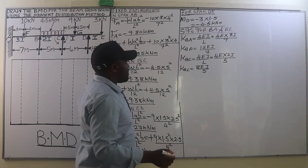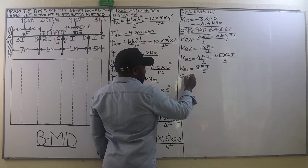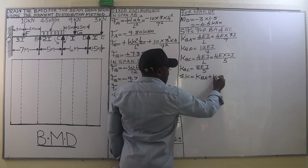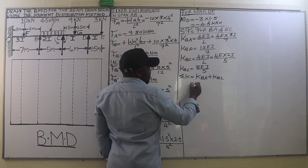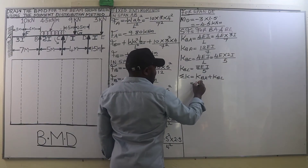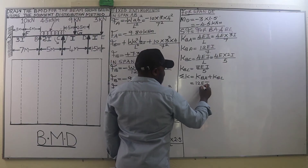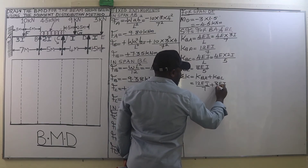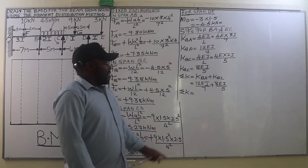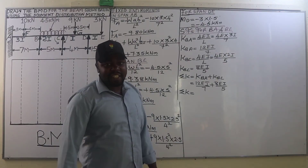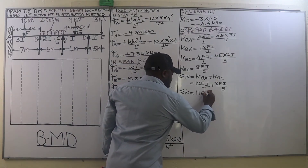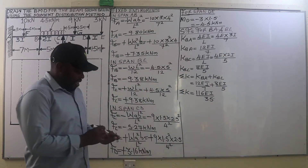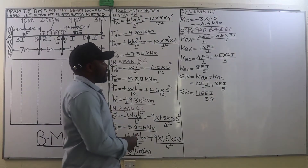The total stiffness factor at joint B is the summation: K_BA plus K_BC equals 12EI/7 plus 8EI/5, which gives a total stiffness factor of 116EI/35.